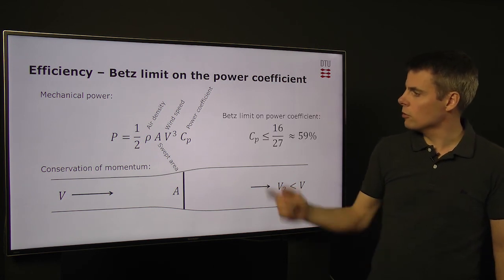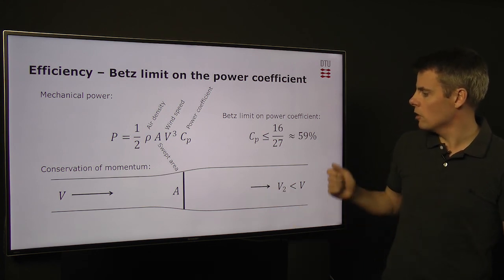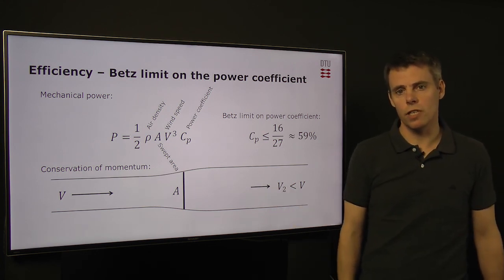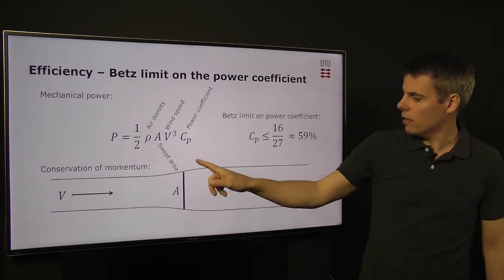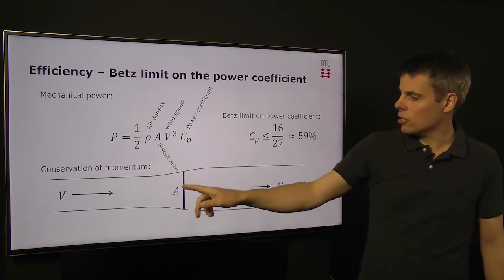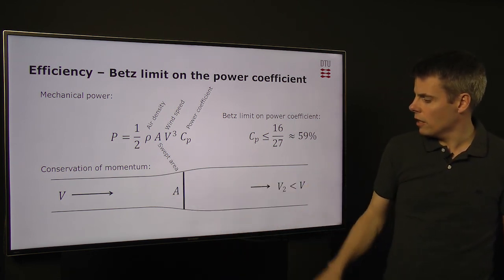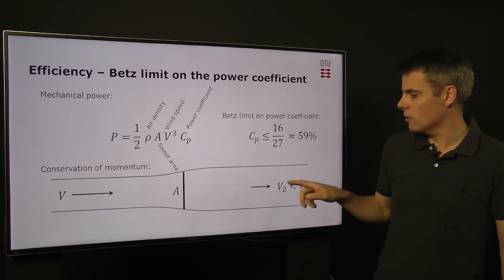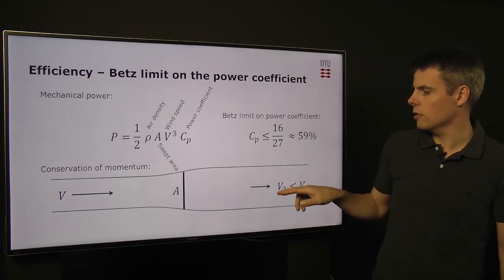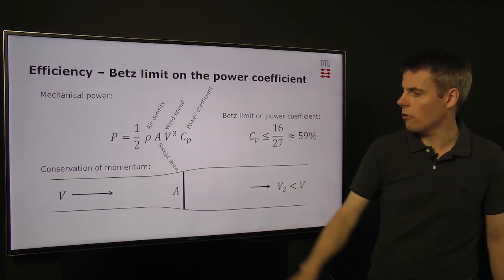The well-known Betz limit is limiting the power coefficient due to conservation of momentum to about 59%. It's simply due to the fact that the wind turbine extracts the momentum from the wind, which slows down the wind speed. And there is a limit in how much you can slow down the wind and still keep an efficient extraction of energy in the swept area.